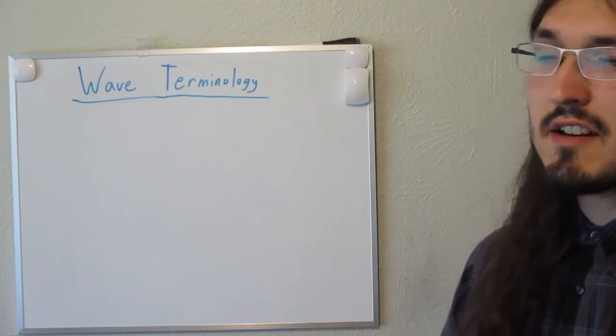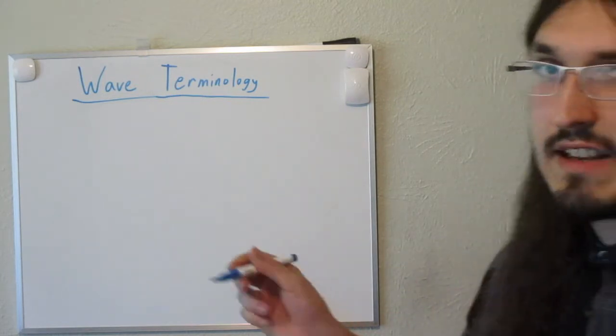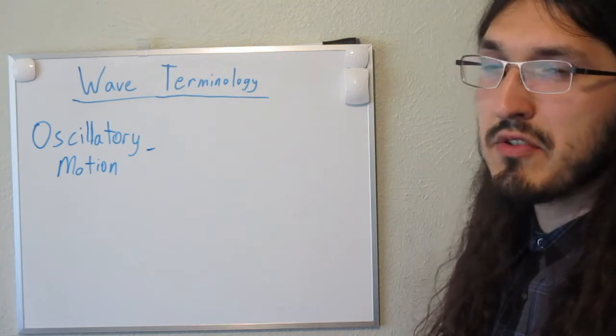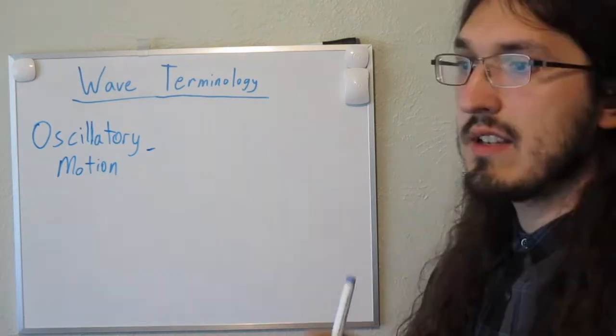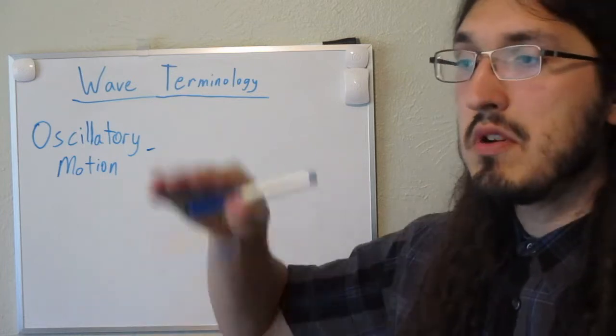The first term I want to define is oscillatory motion. Waves move in a way that we can describe as oscillatory motion. What oscillatory means is that something is moving in a repeated motion.